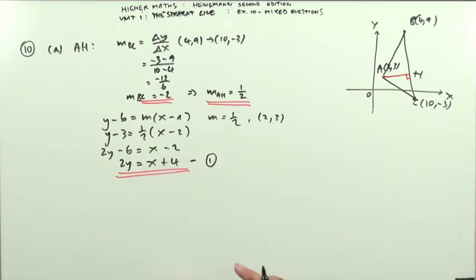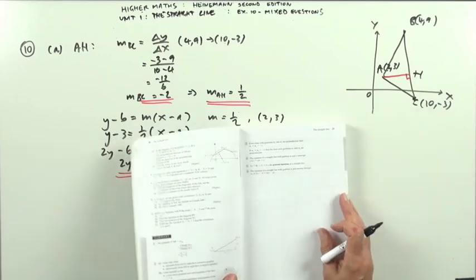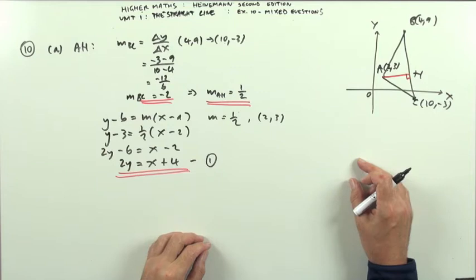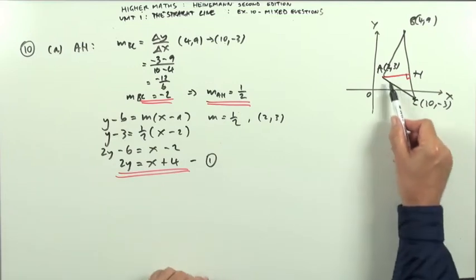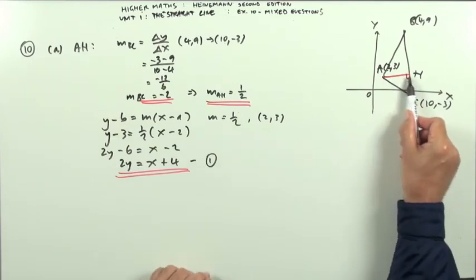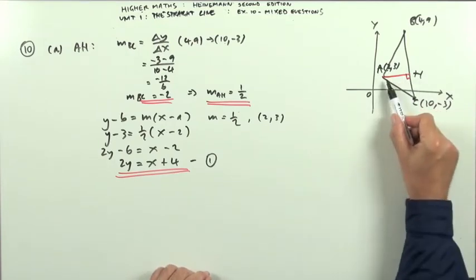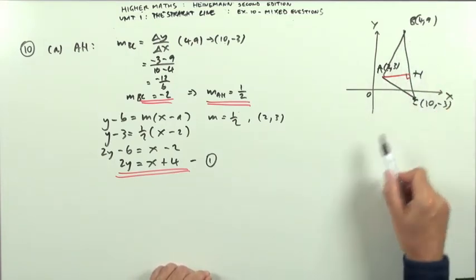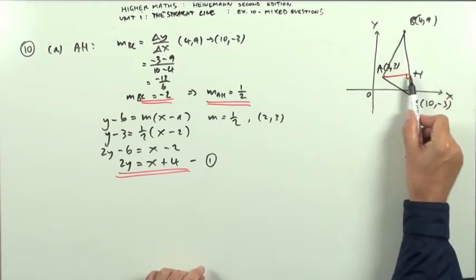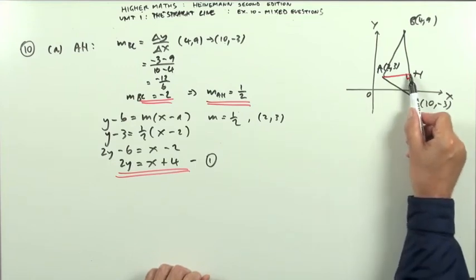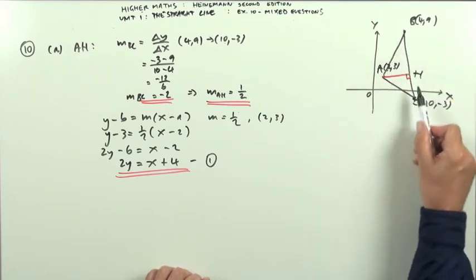That's equation 1 — give it a name in case we need it later. Now part B: find the area of the triangle. This could be quite involved because it requires working out base and height. The question is leading that way by asking for the altitude. I'll use the formula ½ base × height, which means I need the length of AH and the length of BC. BC won't be too troublesome, but for AH I'll need to find H first.